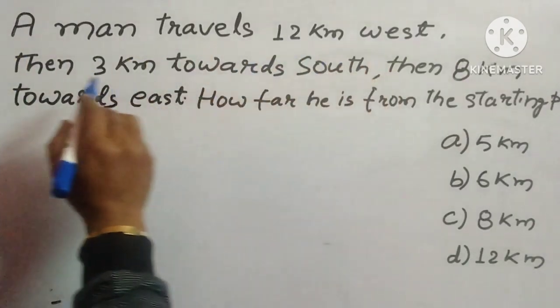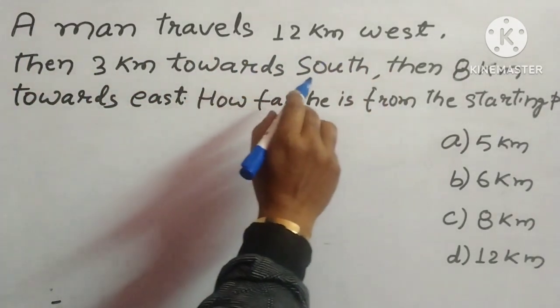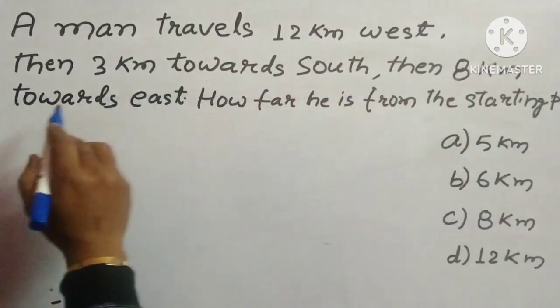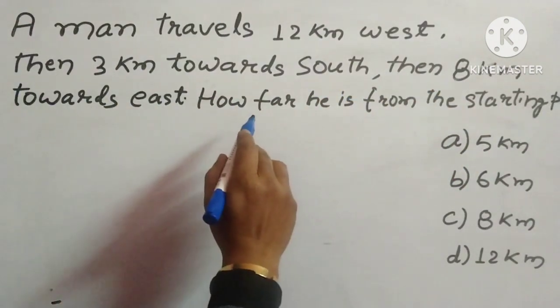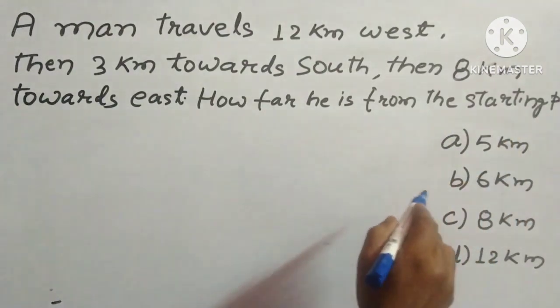A man travels 12 km West, then 3 km towards South, then 8 km towards East. How far is he from the starting point?